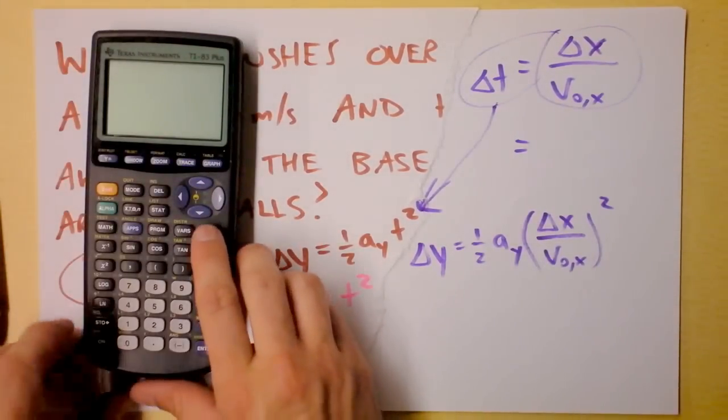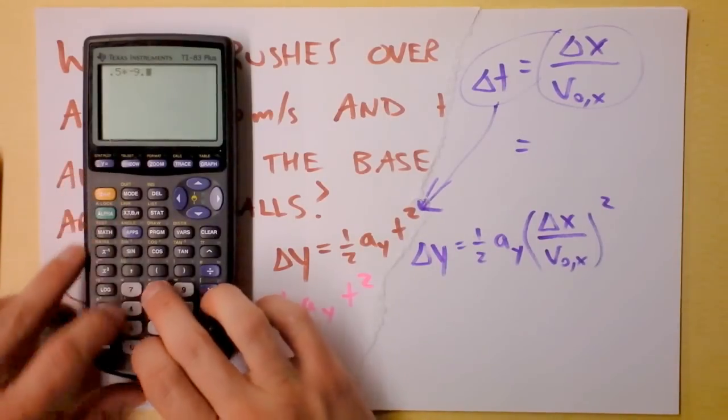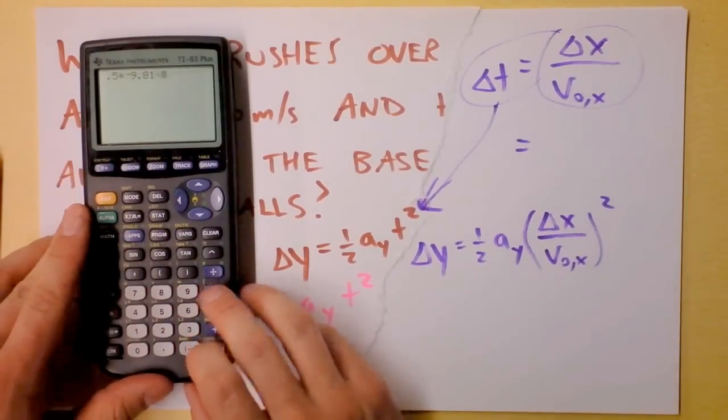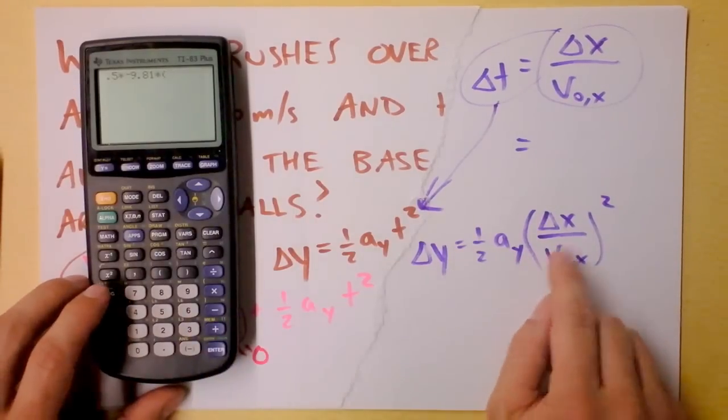Let's do it. Delta y is, wait for it, one half. I'm going to put in a 0.5 and then I'm going to multiply it by negative 9.81 meters per second squared and then I'm going to multiply that by open parentheses because we need to do some division.